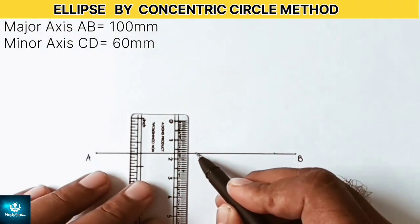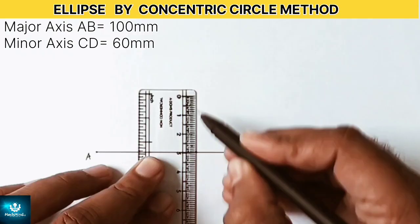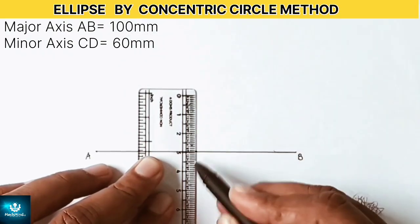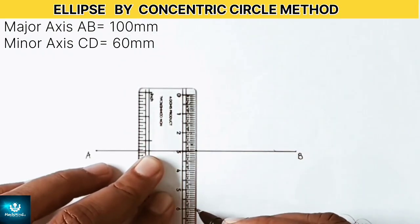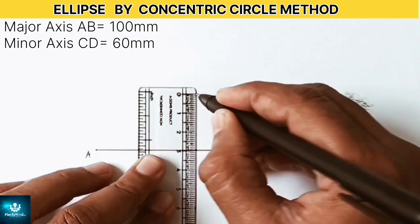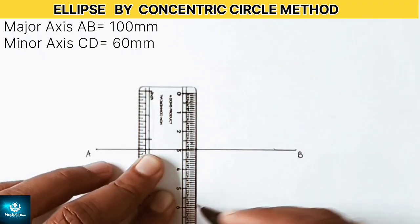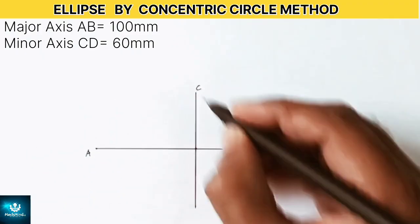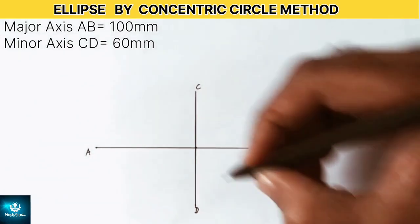From this midpoint draw a vertical line of 60 mm. Make sure that half length 30 mm is above the horizontal line and another half length of minor axis 30 mm below it. Name the endpoints as C and D.